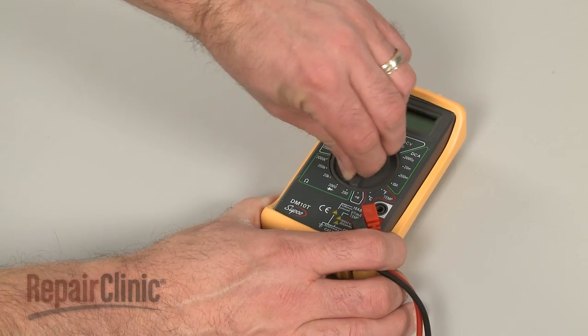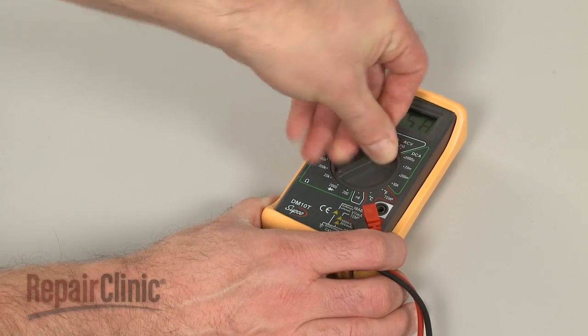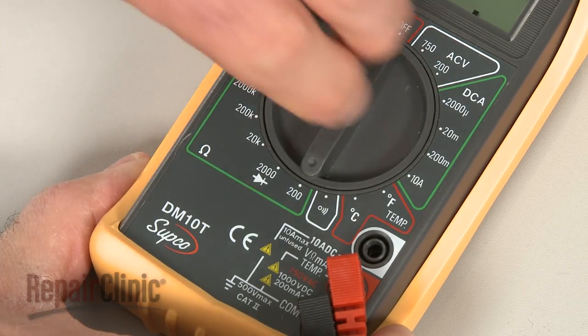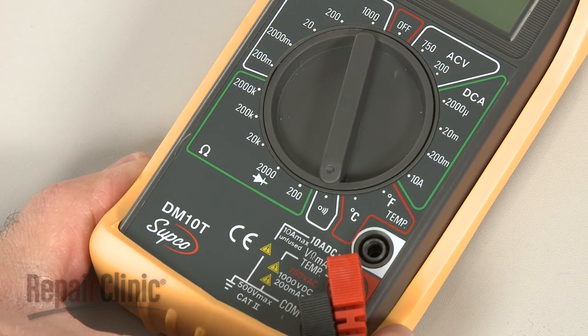When using a digital model, again rotate the dial to the lowest setting for ohms of resistance or resistance with tone if your meter has this option.